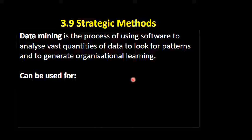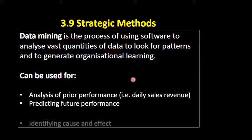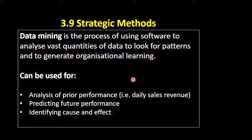A piece of data on its own is not terribly useful. What we need to do is use software to analyse that data so we can observe patterns and start to draw conclusions that might be useful for our business. We can analyse prior performance and use that to predict future performance. We can identify cause and effect — looking at correlation versus causation. For example, if we put one thing on offer and it affects the sales of another, are those two things just happening at the same time by fluke, or is there actual cause and effect? The more data we have, the more likely we are to work out if something is correlation or causation.